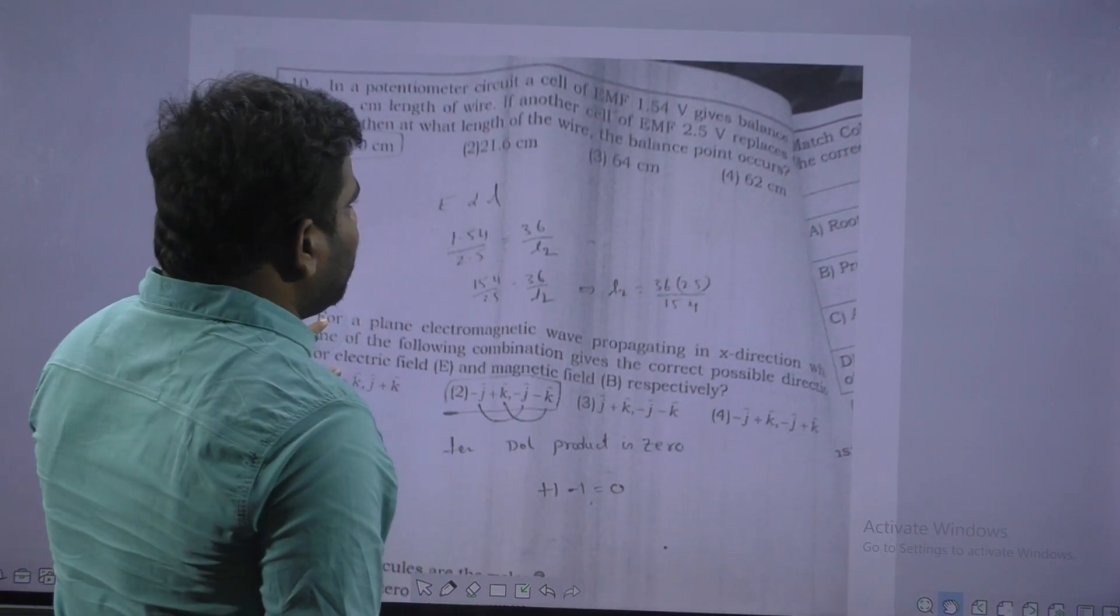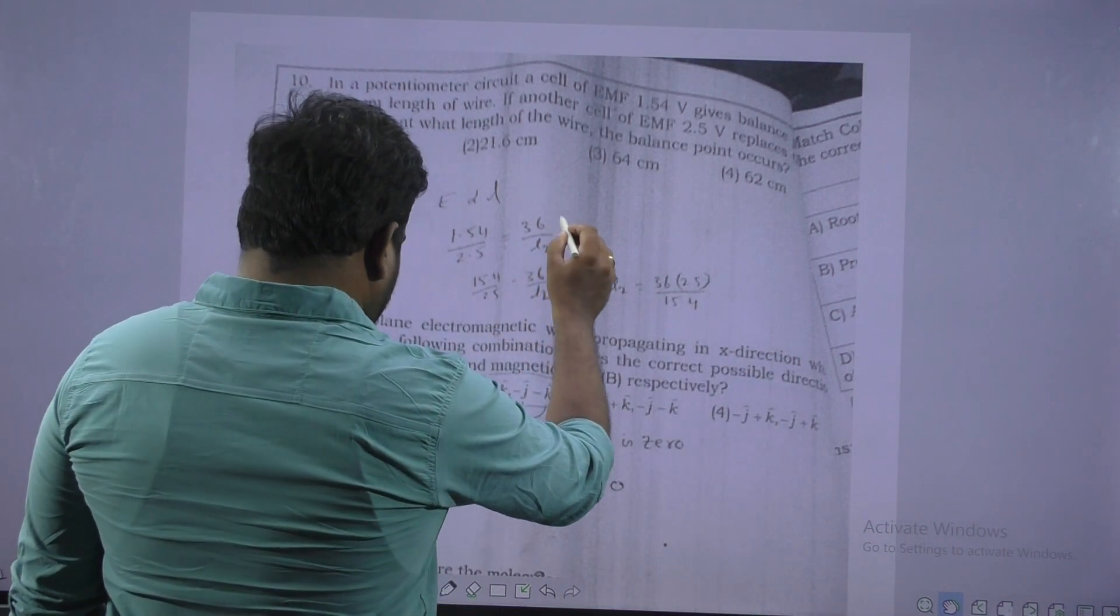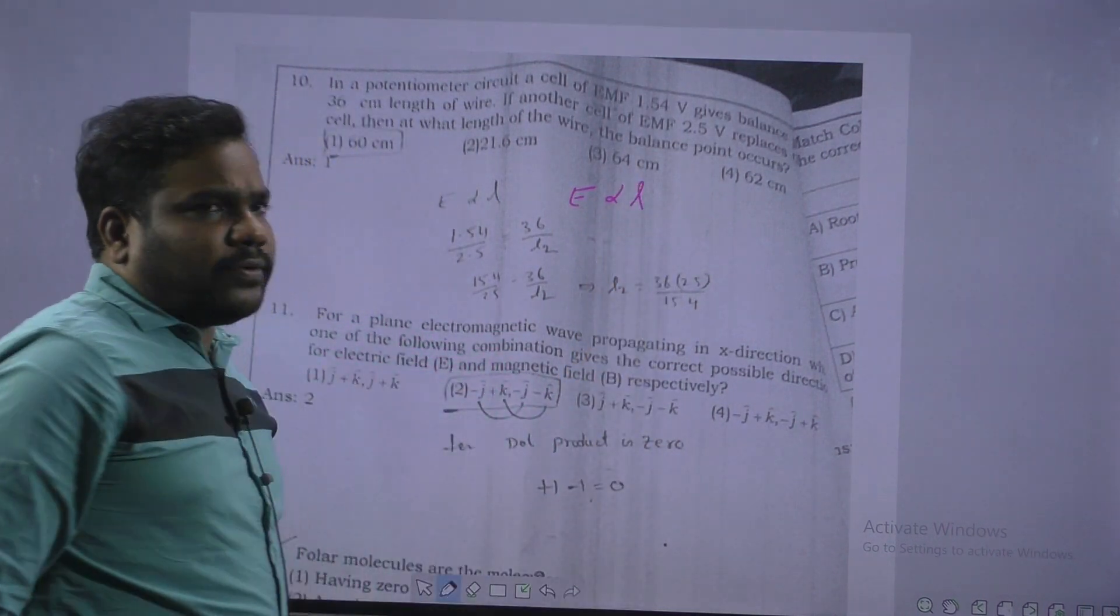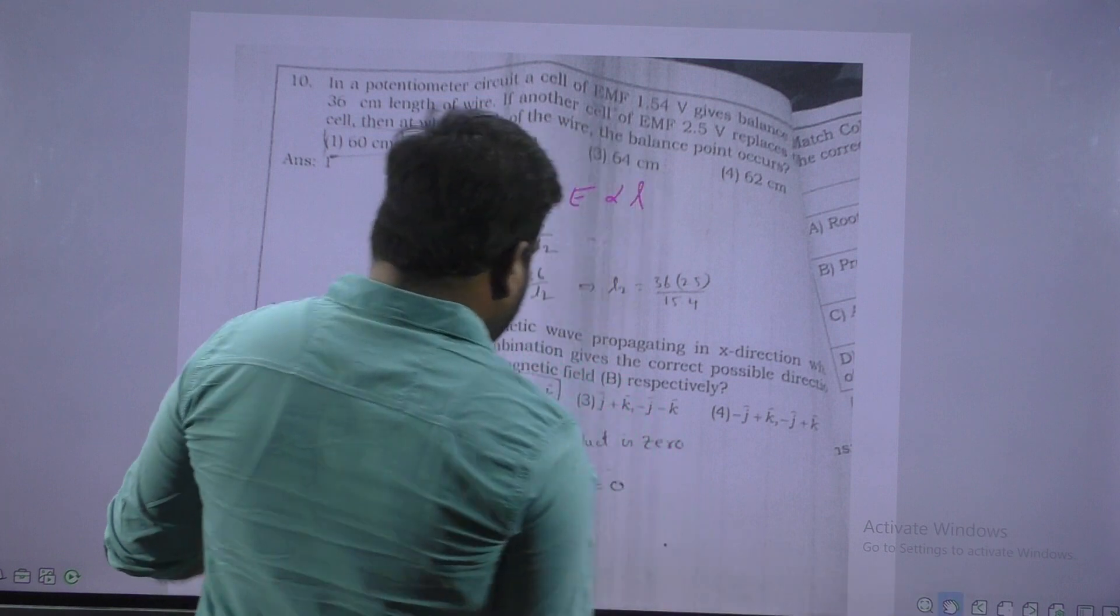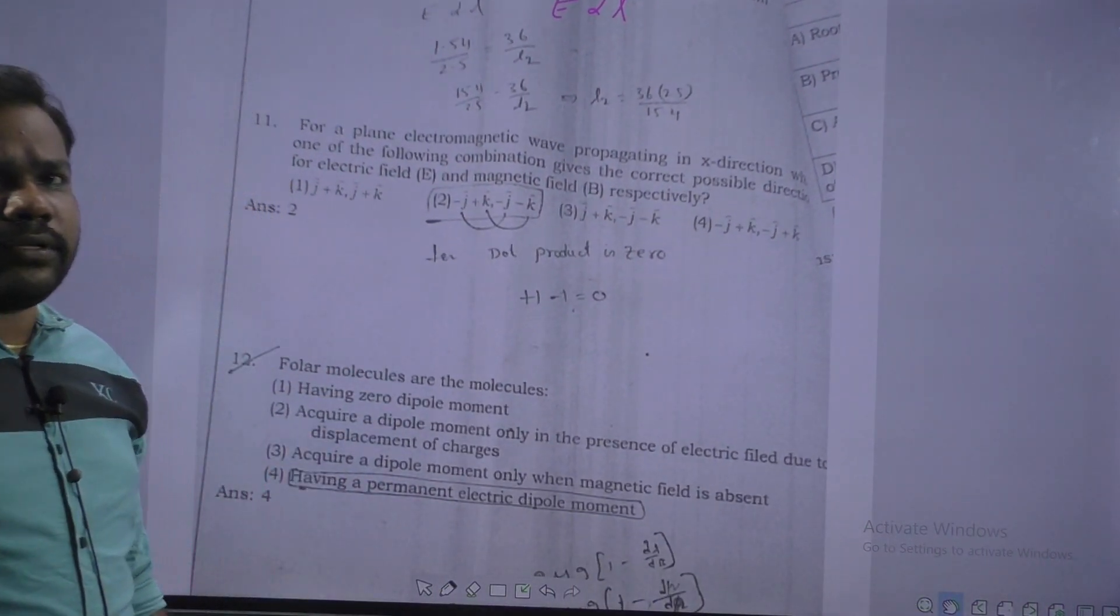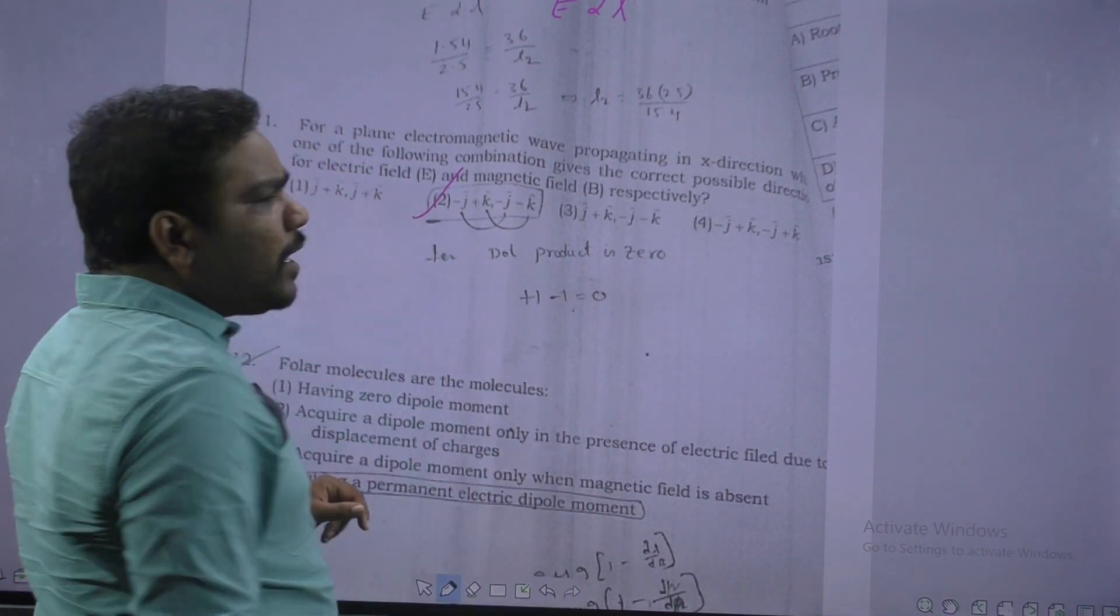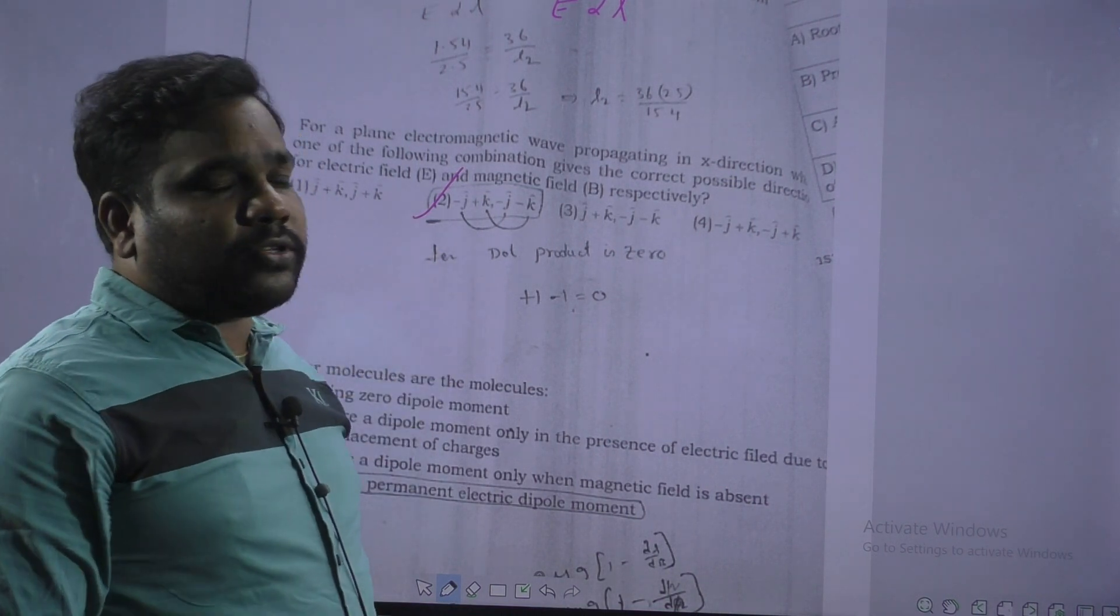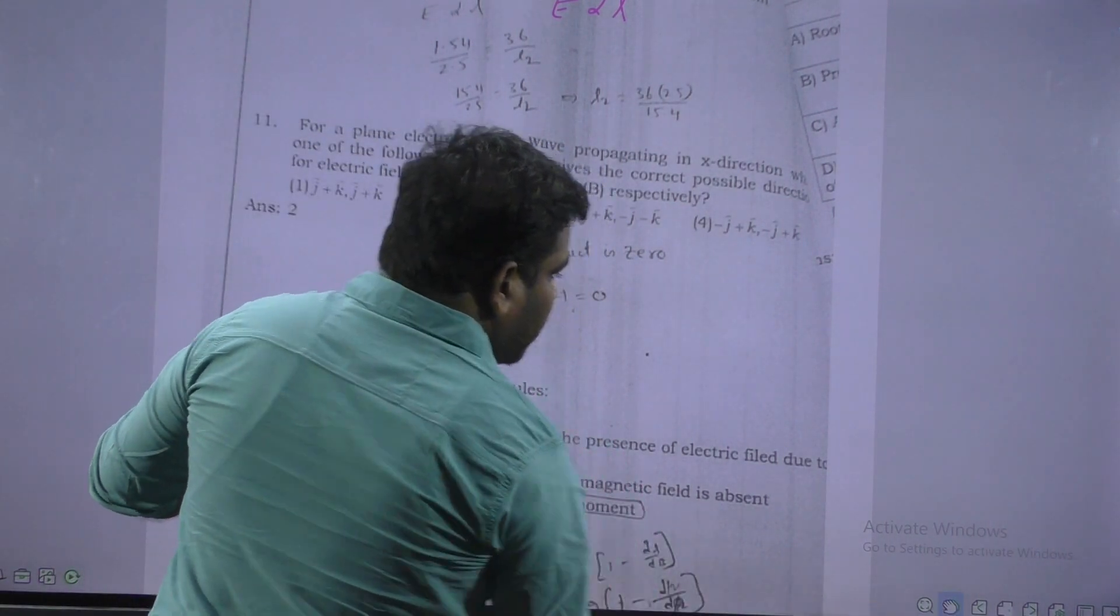Next question. This is from potentiometer, direct question. EMF is directly proportional to length, balancing length. That means u1 by u2 is equal to l1 by l2. Next. Here is electromagnetic wave, perpendicular to both electric fields. Option is second option correct, because if you do dot product of given two vectors, it will be zero. Dot product zero means both should be perpendicular, so second option correct.